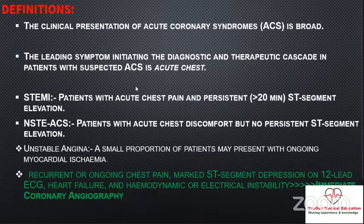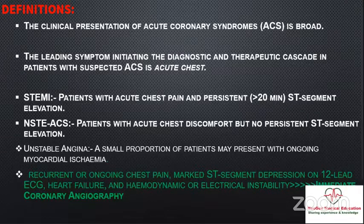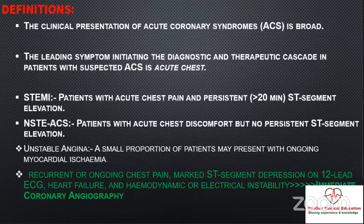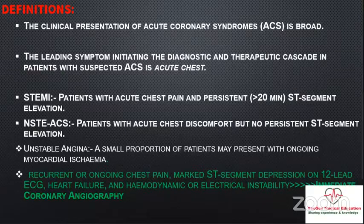The clinical presentation of acute coronary syndrome is really broad, ranging from complications like cardiac arrest and cardiogenic shock, or patients presenting with acute valvular lesions like mitral regurgitation secondary to myocardial infarction. The main leading symptom is pain — sometimes just tightness, epigastric pain, or arm pain.